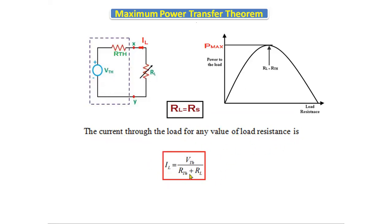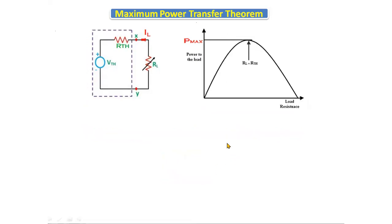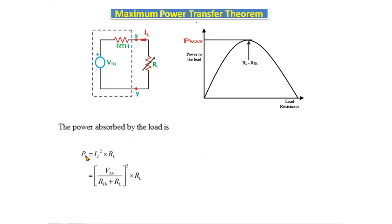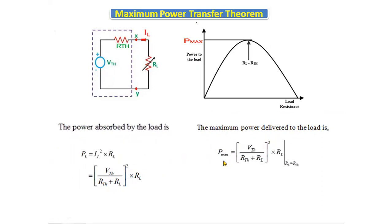Since the load resistor is a variable quantity, we can take different load values. The power absorbed by the load is given by: PL equals IL squared into RL. Substituting the IL formula, we get PL equals [Vth divided by (Rth plus RL)] squared, multiplied by RL.